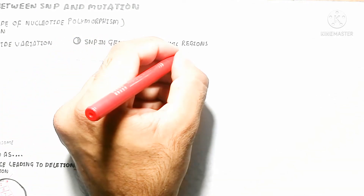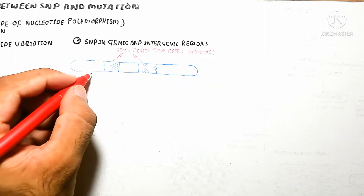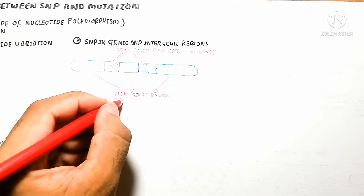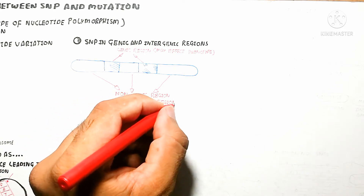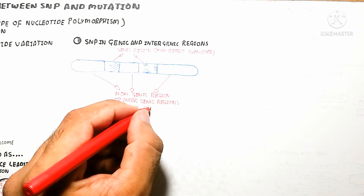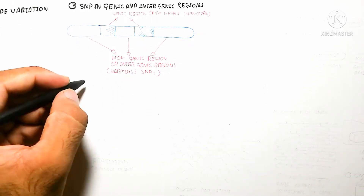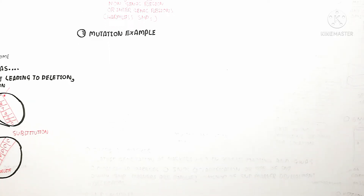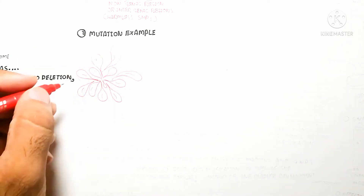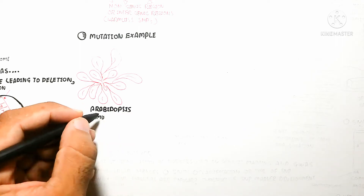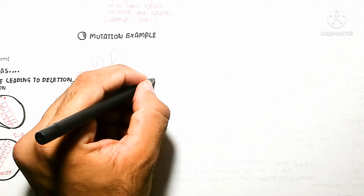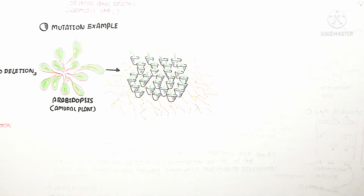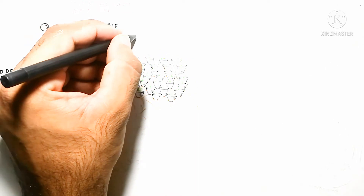SNPs can occur in genic and intergenic regions of the chromosome. SNPs in the intergenic or non-genic region are harmless because they show a trait and are passed on generation to generation. On the other hand, SNPs in the genic region may affect the phenotype. However, most SNPs remain genetically present but do not show phenotypically — they are expressed phenotypically only when located in genic regions.